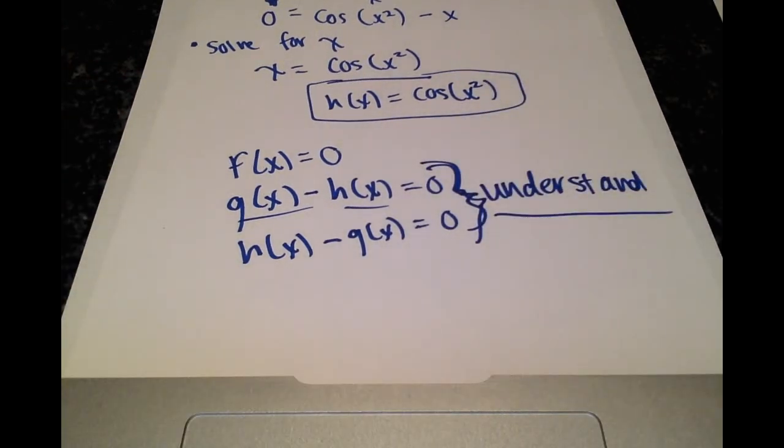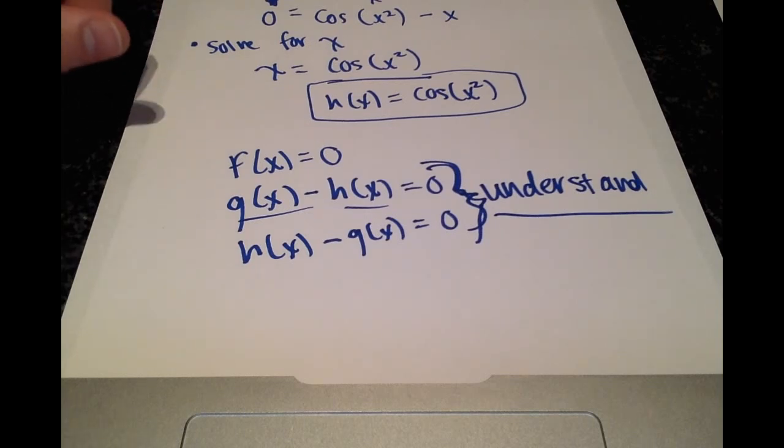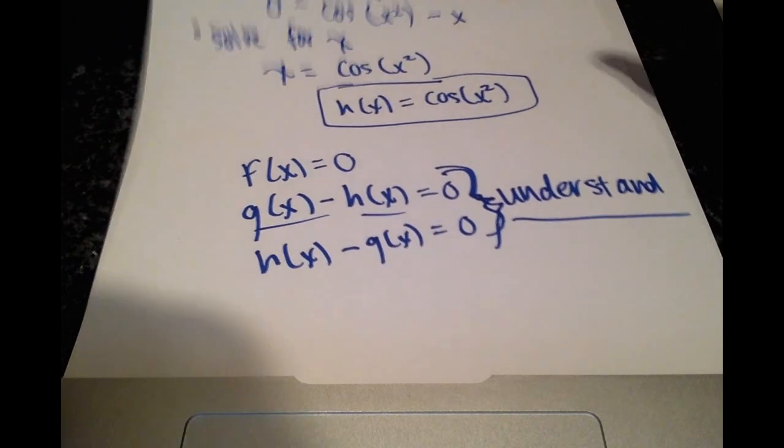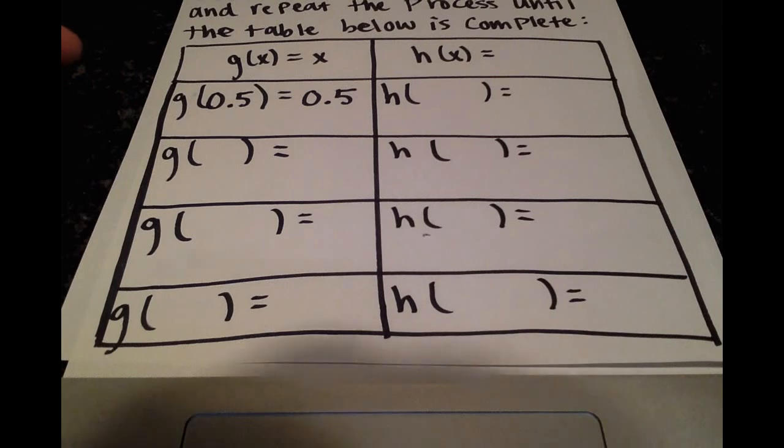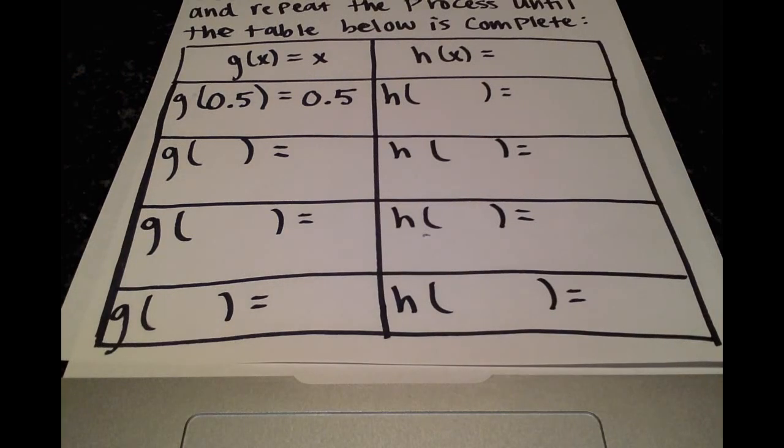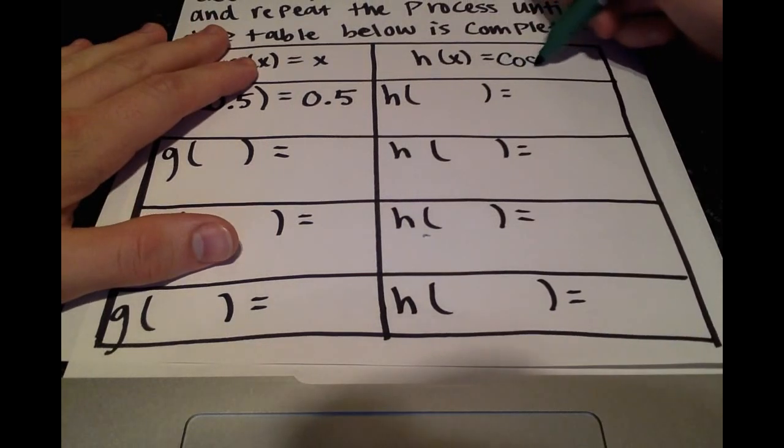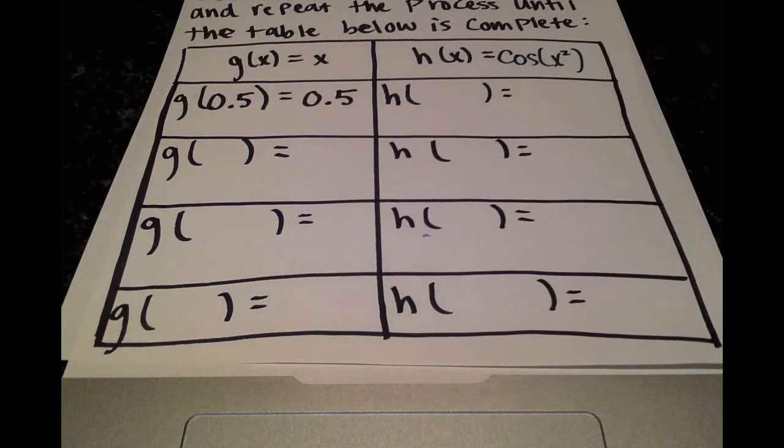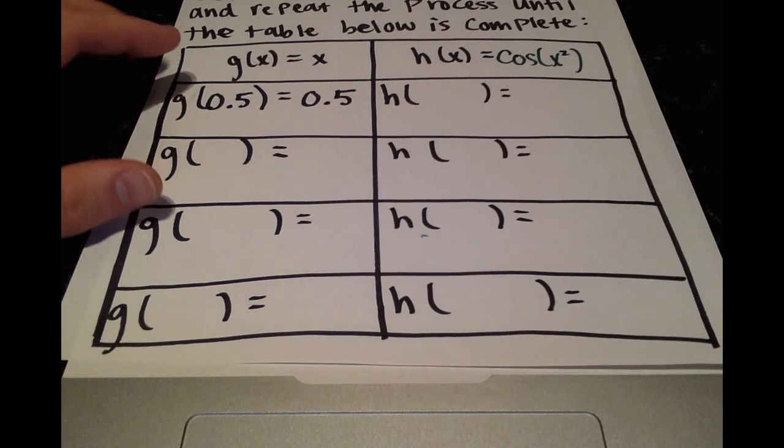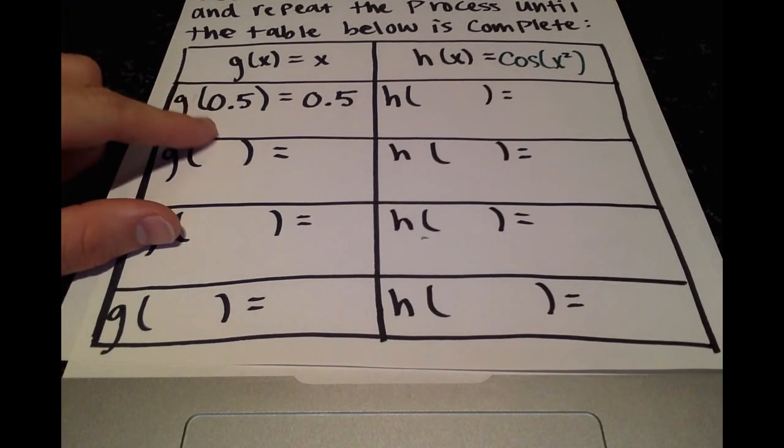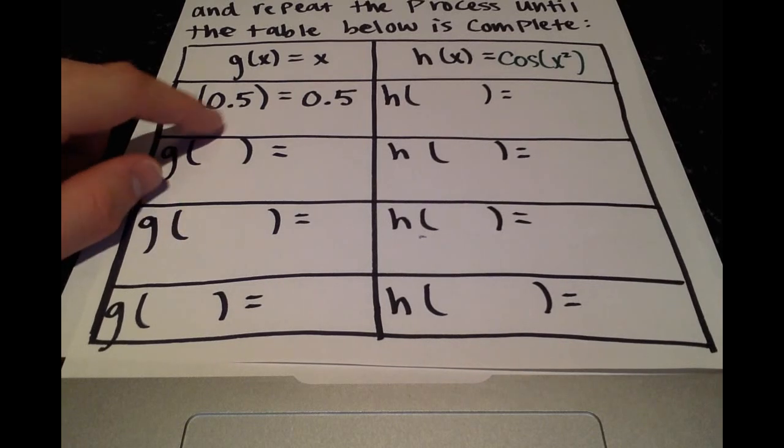Okay, so let's actually get into the numerical part where we plug in some numbers and get this table going. So we have our table here. We can fill in our h of x value as cosine of x squared. Alright, and then they do the first step for us. So we have our initial guess of xi equals 0.5, so g of 0.5 equals 0.5.